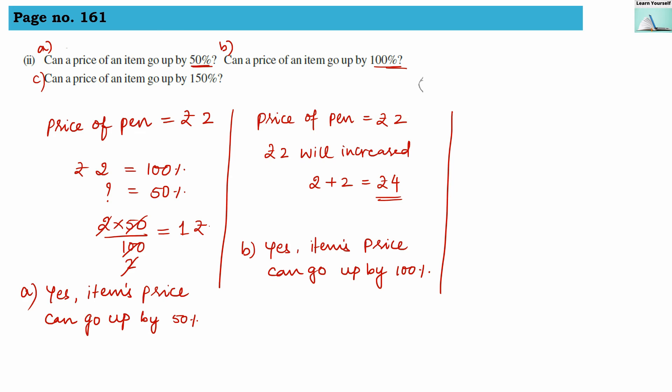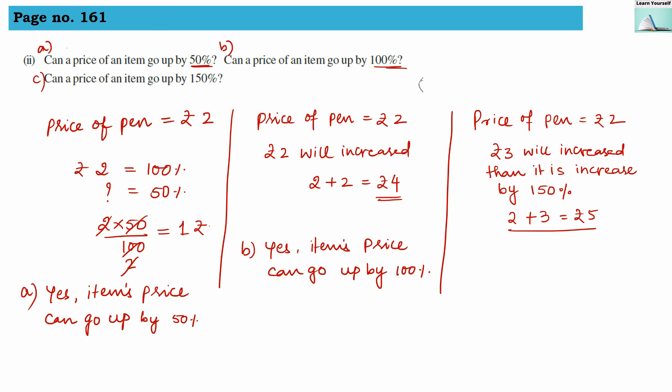For question c, can a price of an item go up by 150%? If the price of a pen is 2 rupees and it increases by 3 rupees, that is a 150% increase. So when the price goes from 2 rupees to 5 rupees, the price hike is 150%. So yes, this is possible.